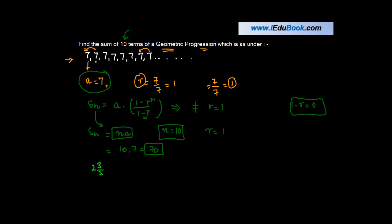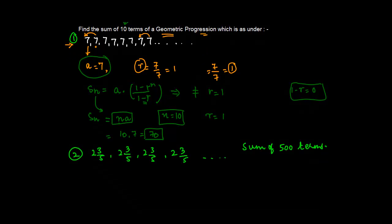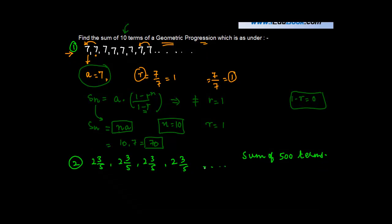Now consider a second example: a series 2⅗, 2⅗, 2⅗, and so on — that is, each term is 13/5 — and you are asked to find the sum of 500 terms. Adding all 500 terms individually would be tedious, so we apply our formula. Here a = 13/5 and n = 500.